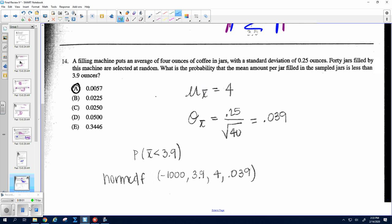Number 14, so we've got 40 jars, and we're talking about means. And so 40 jars is greater than or equal to 30, so you can use norm CDF on this problem. And we want to know that all the sampled jars, the mean amount is less than 3.9. So we want to have a lower bound of negative 1,000, an upper bound of 3.9, a mean of 4.